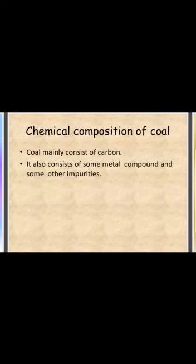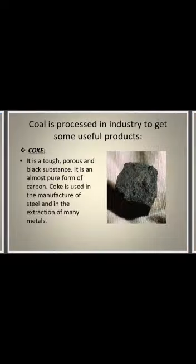Coal mainly consists of carbon. It also consists of some metal compounds and other impurities. Coal is processed in industry to get some useful products, obtained by destructive distillation of coal. The first product is coke. It is a tough, porous, and black substance — an almost pure form of carbon. Coke is used in the manufacture of steel and in the extraction of many metals.